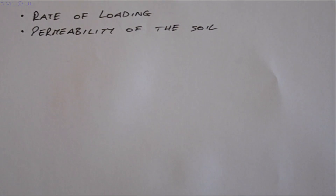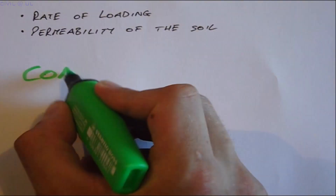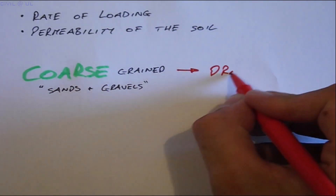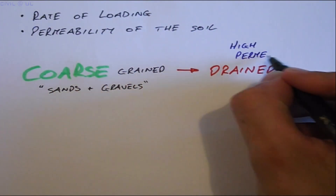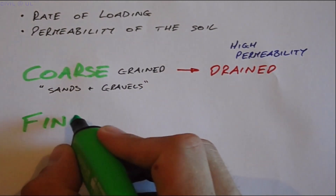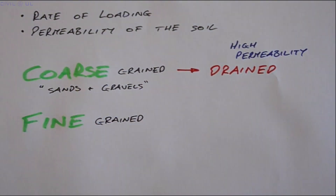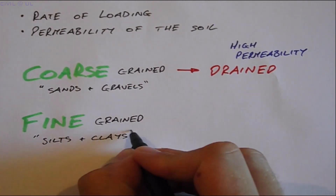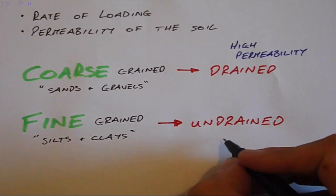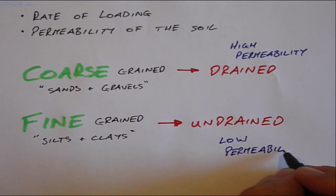In general, we normally treat coarse-grained soils such as sands and gravels as drained materials because their permeability is high, and therefore water can flow freely through the large and continuous void spaces. Fine-grained soils such as silts and clays, however, have much smaller void spaces, and often these are not continuous.